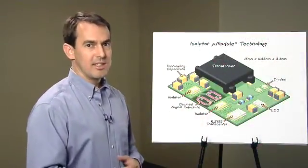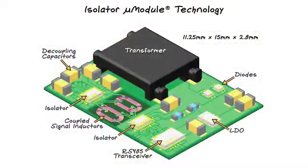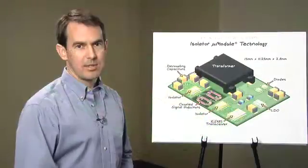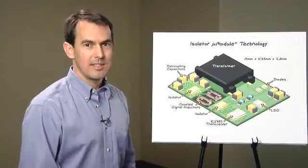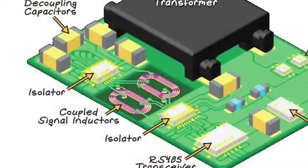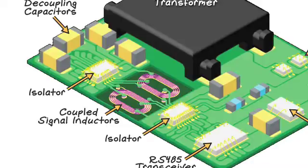Now let's look inside the internals of this product. Here's the isolated DC to DC transformer, which provides up to one watt of continuous output power. Output rectifying shot keys and an LDO provide low ripple 5-volt output, which powers the isolator and transceiver with sufficient surplus power for additional application circuits, like network activity LEDs at the port connector. Here are the coupled signal inductors fabricated into the module substrate. These two isolator die handle isolated communication across the isolation barrier.